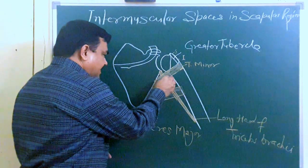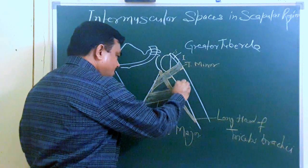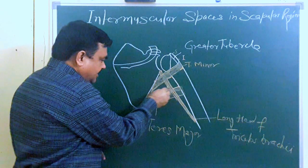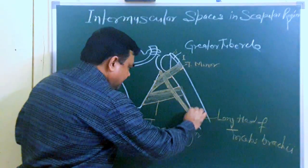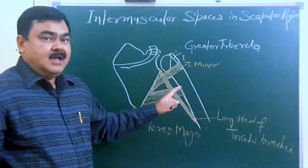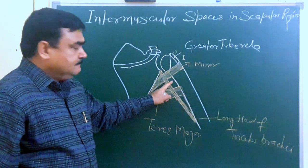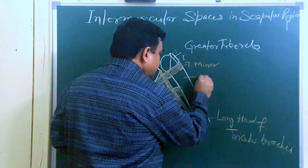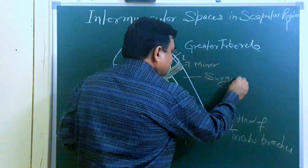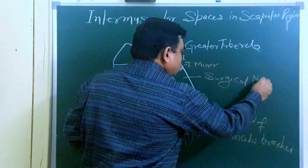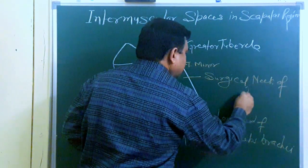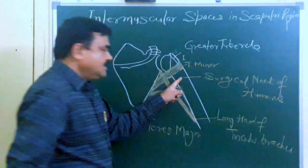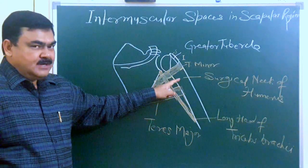Here you can see there is a space — this space is known as the quadrangular space. Here is also a space — this is the upper triangular space, and this is the lower triangular space. The quadrangular space is laterally bounded by the surgical neck of the humerus — this is the surgical neck of the humerus which forms the lateral boundary of the quadrangular space.